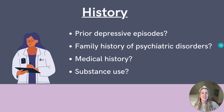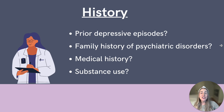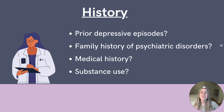A completed PHQ-9, or the nine-item Patient Health Questionnaire, is a great way to take a more in-depth history. Other key history components include prior depressive episodes, family history, medical history, and substance use. This historical context will help us rule out any other potential differentials and help direct our treatment.